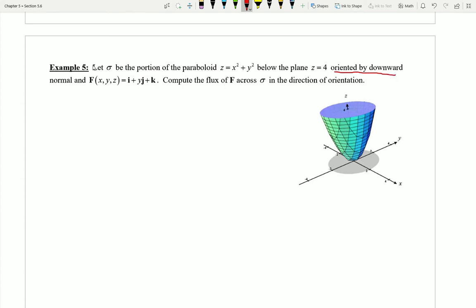Let sigma be the portion of the paraboloid z equals x squared plus y squared that exists below the plane z equals 4. If I look at the picture I can see my paraboloid, the shadow it casts down here in the xy plane, and this bluish purple part up top is z equals 4.